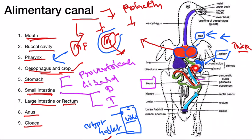The duodenum receives ducts from the hepatic gland — two ducts join the duodenum — and one duct from the pancreas also joins the duodenum. The next part of the small intestine is the ileum, the largest part of the small intestine. It is a completely coiled or convoluted tube with villi on the inside, allowing the ileum to absorb more nutrients from the food.